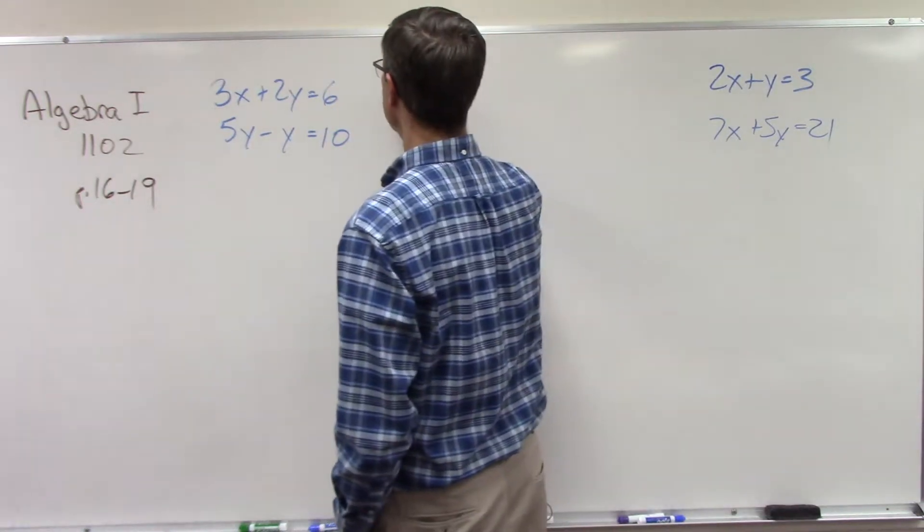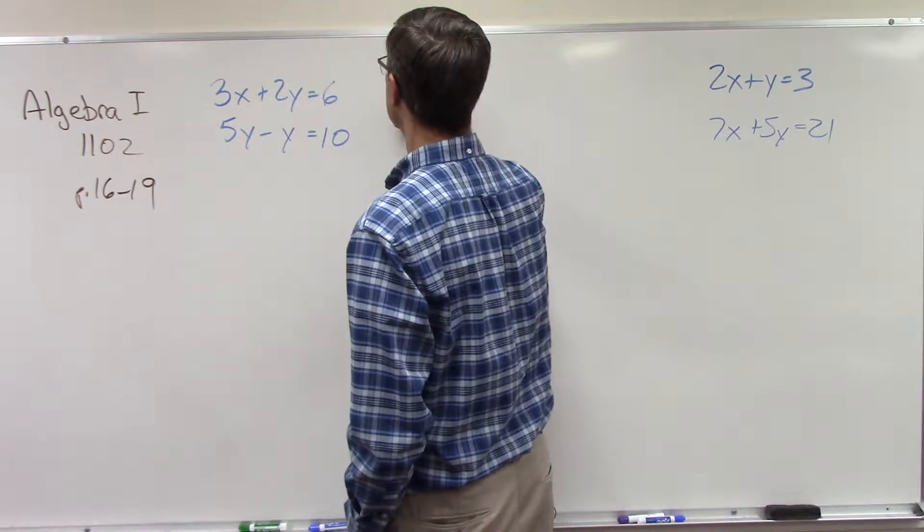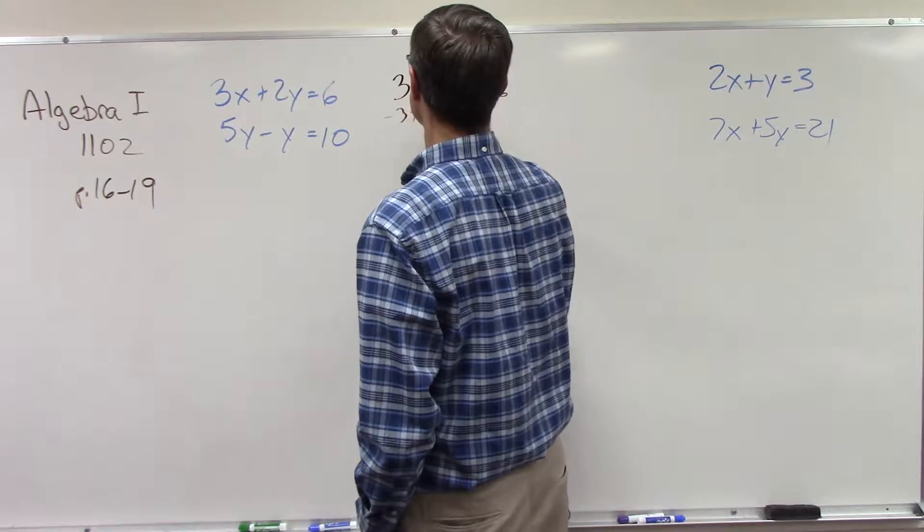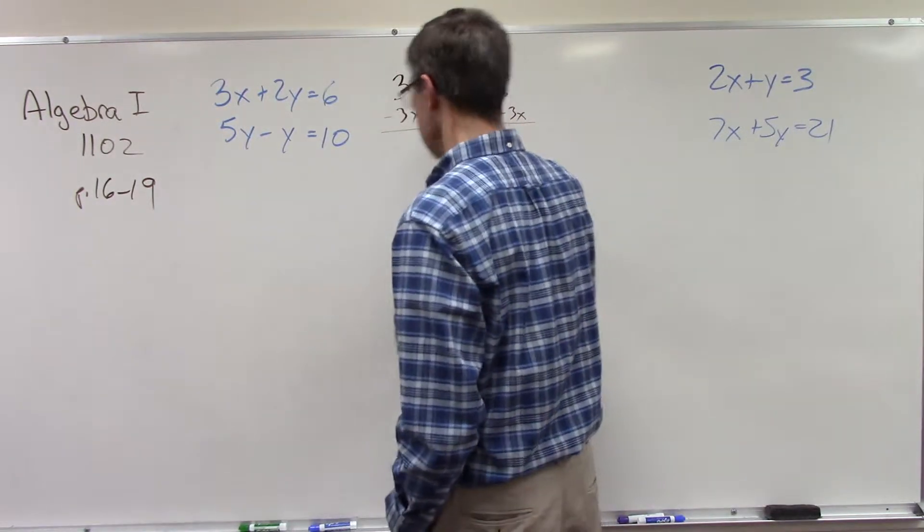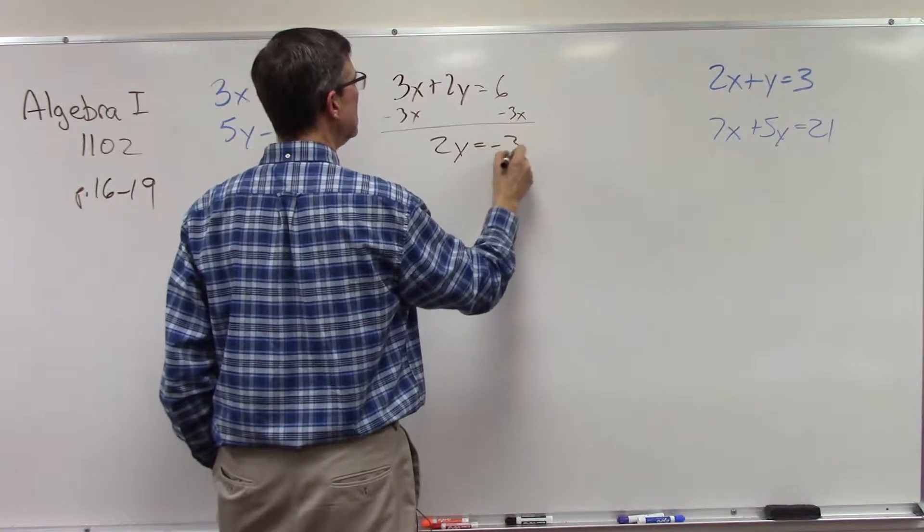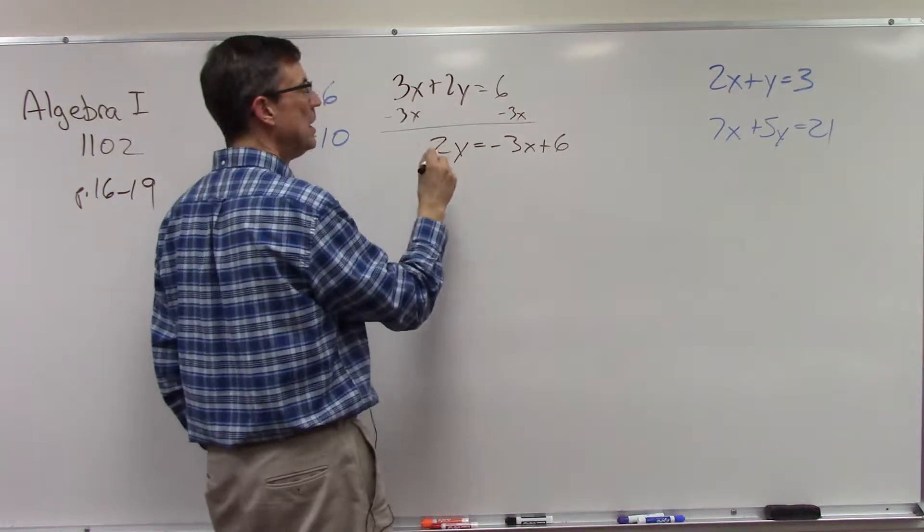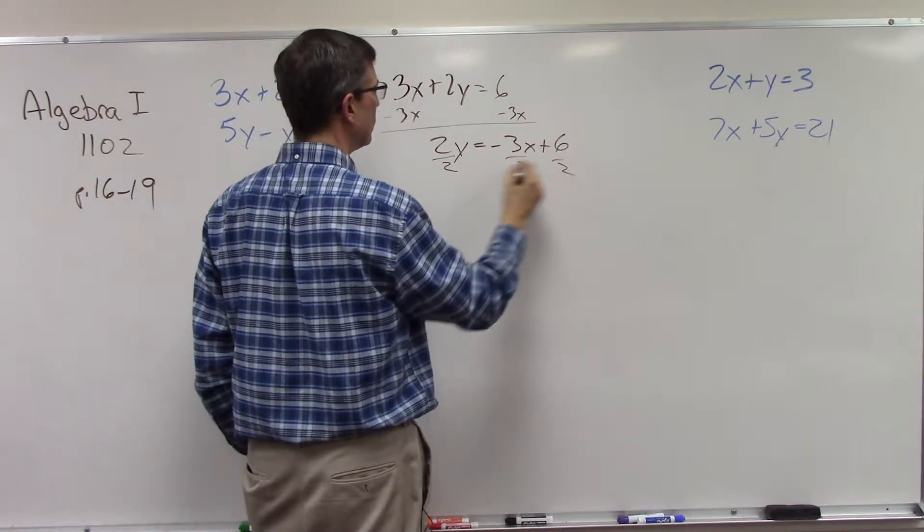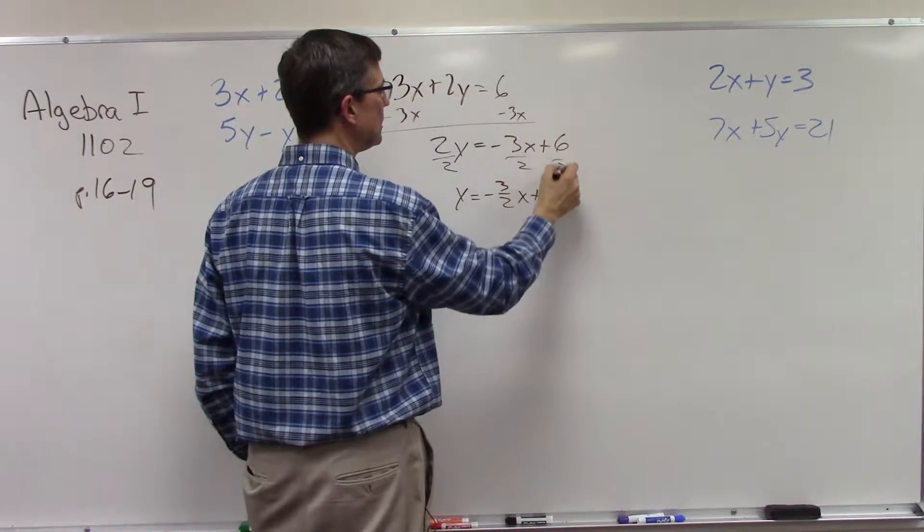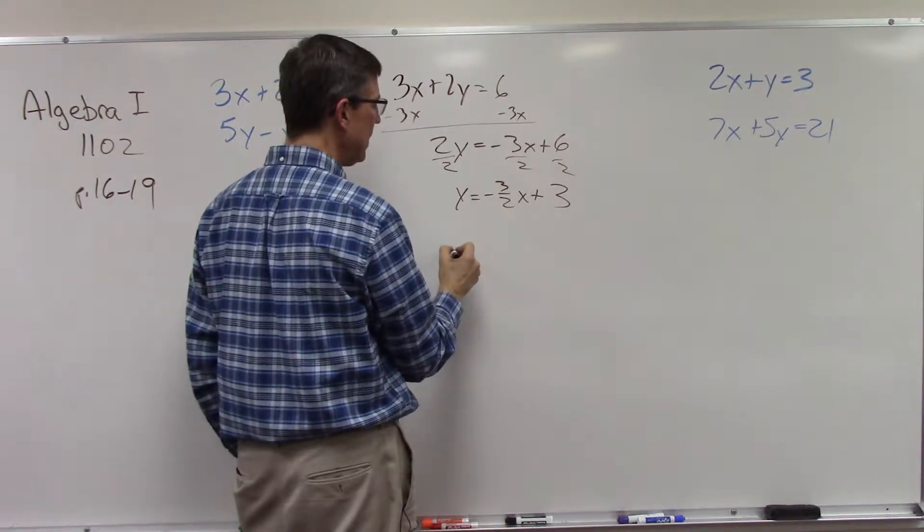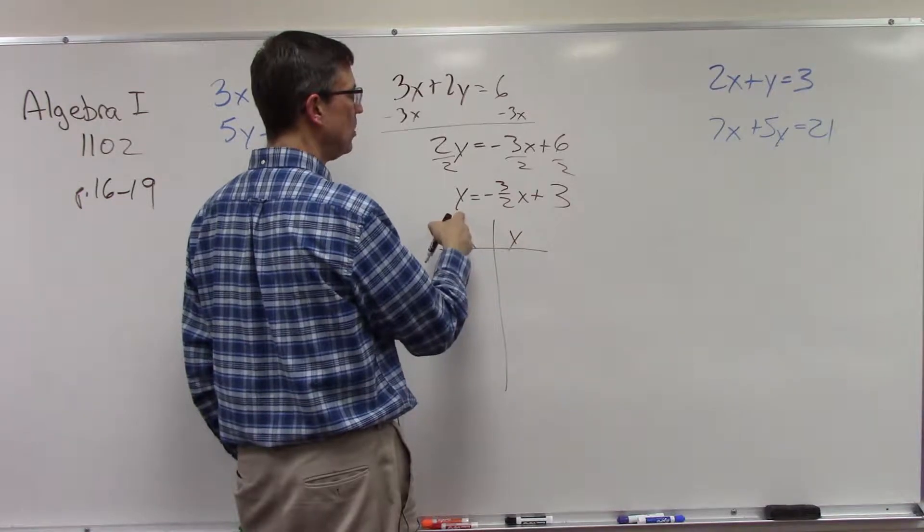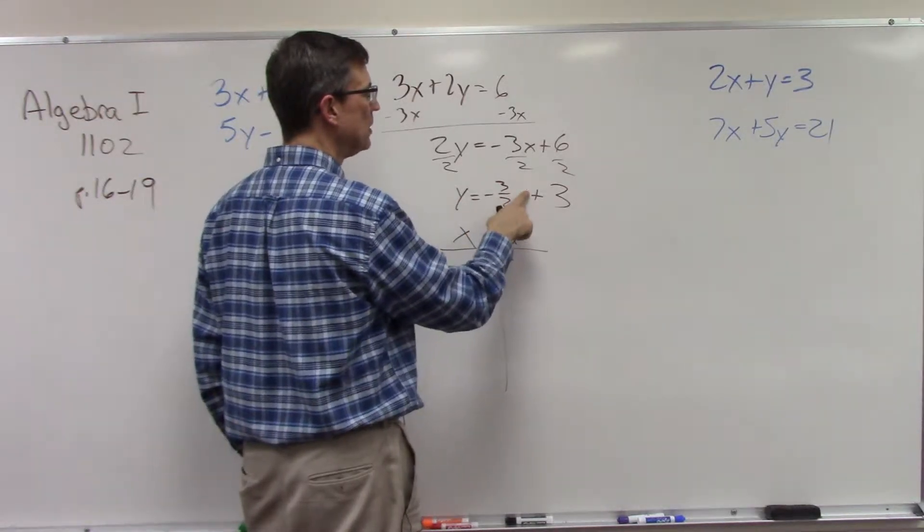What we should always do in a case like this is rework the equation so that we solve for y first. 3x plus 2y equals 6. I'm going to subtract 3x from both sides. So 2y equals negative 3x plus 6. Now I'm going to divide by 2.